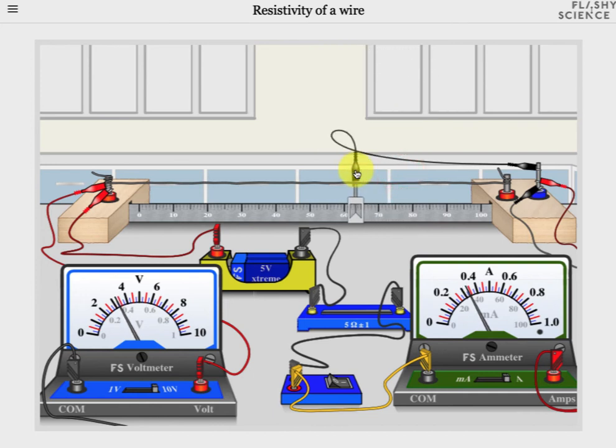If you want to change to a different wire again, remember to turn the switch off first before clicking on the wire to move to the wire select screen.